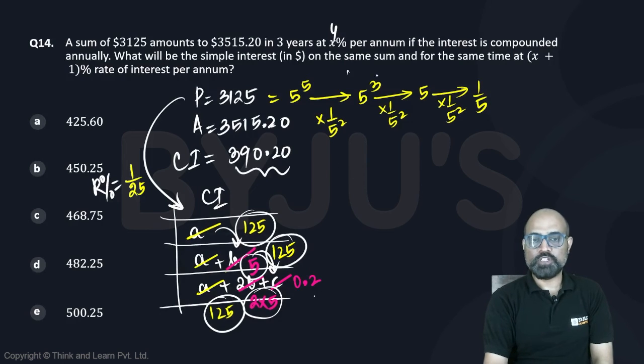So x is 4 percent. If x is 4 percent, what is the simple interest on the same sum and for the same time at x plus 1 percentage? They're asking simple interest at the rate of 5 percent for three years, which is going to be same as 15 percent.